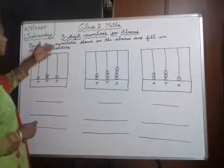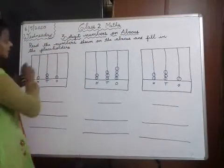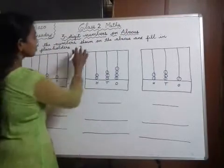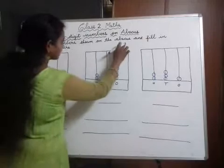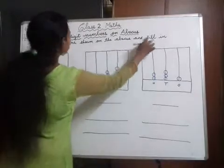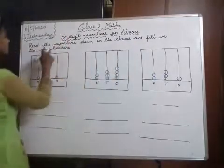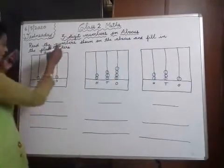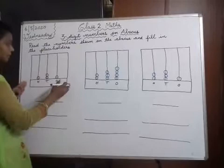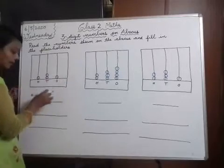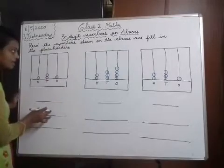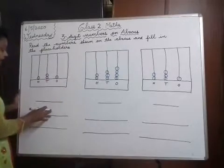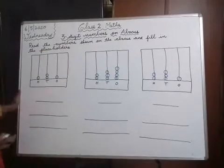First, read the following — read the numbers shown on the Abacus and fill in the placeholders. After seeing the Abacus, you have to write the number and the number name also.